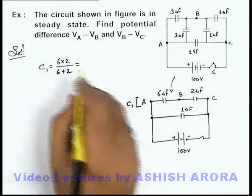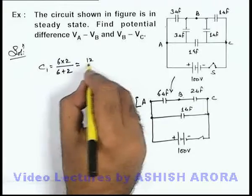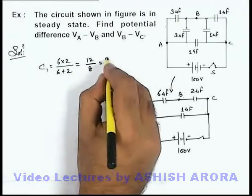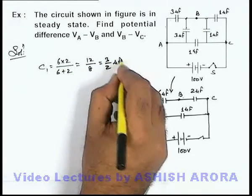the combination capacitance here is, this will be 12 by 8, that can be written as 3 by 2 microfarad.